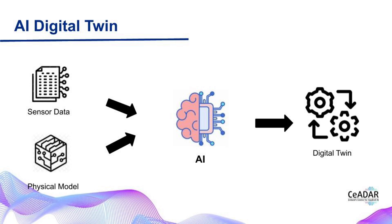AI digital twins use artificial intelligence to learn and adapt over time, making them even more valuable as they gather more data and experience. With real-time data from sensors and other sources, they can continuously update their model and make more accurate predictions. AI makes sense of all the data, so it can identify trends, outliers, and help with decision making. It's like having a virtual advisor right there with you, constantly learning and evolving.